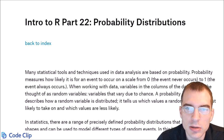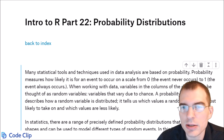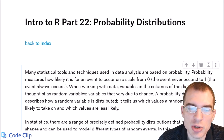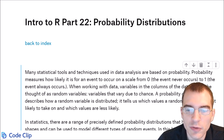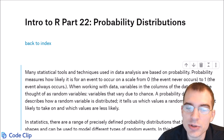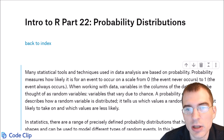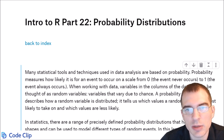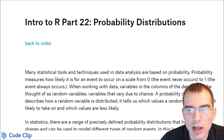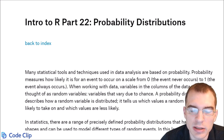Many statistical tools and techniques used in data analysis and machine learning are based on probability. Probability is just a measurement of the likelihood that some event is going to occur, on a scale from zero, which means an event never occurs, to one, which means the event always occurs. Working with data, the variables in your columns can be thought of as random variables, which vary due to chance. A probability distribution tells us which values a random variable can take on, and which values are more likely than others.